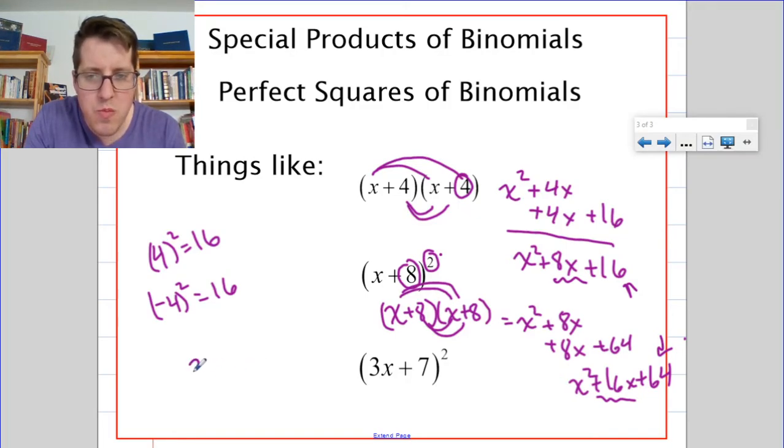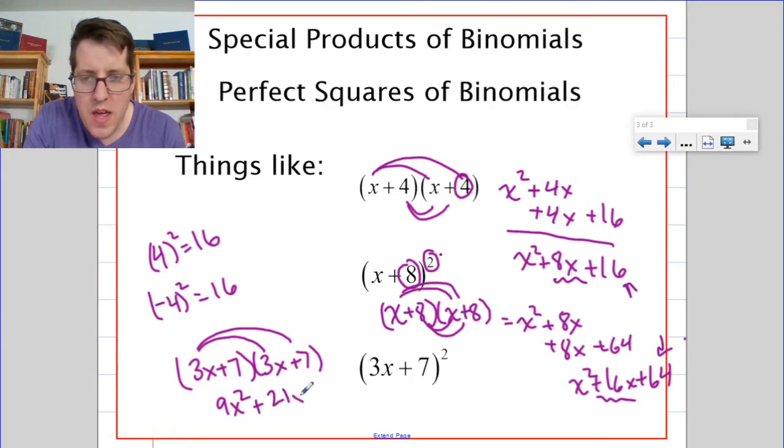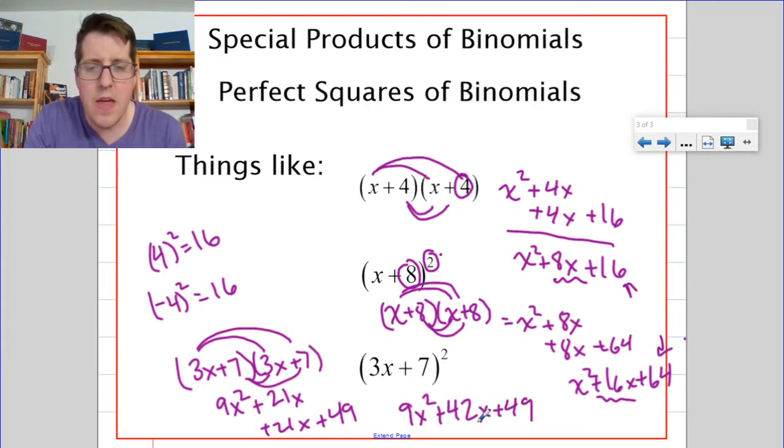Let's see what happens when we multiply 3x plus 7 times 3x plus 7. Well, just like we did with the other one, we see 9x squared plus 21x plus 21x plus 49, or 9x squared plus 42x plus 49. The plot thickens. I see that 49 is 7 squared, and I see that 9 is 3 squared, but where do I go from there?